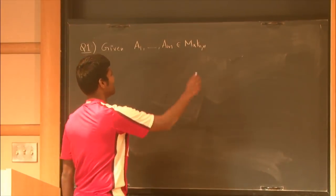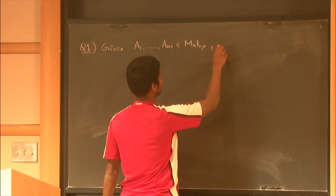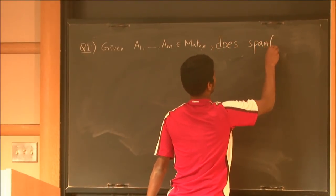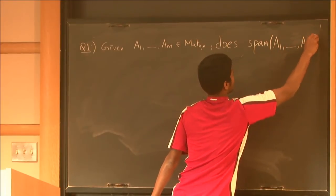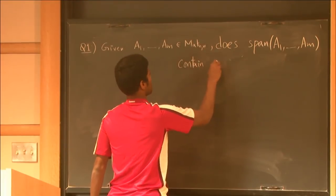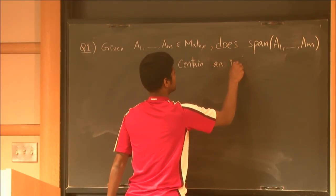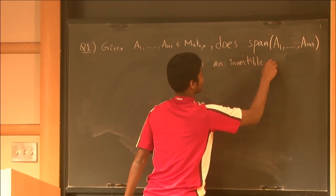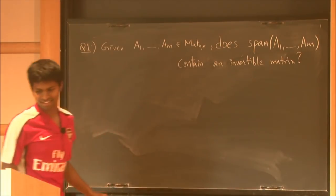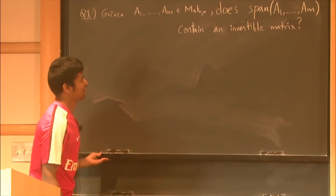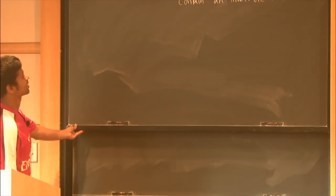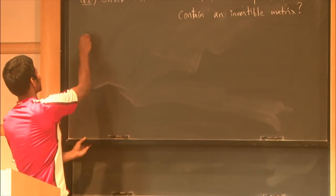So somebody gives you a bunch of matrices like this and then they ask you, does the span contain an invertible matrix? What would you do?